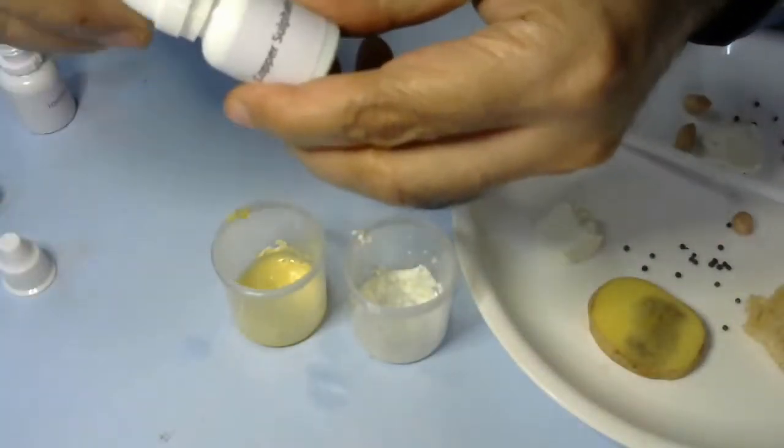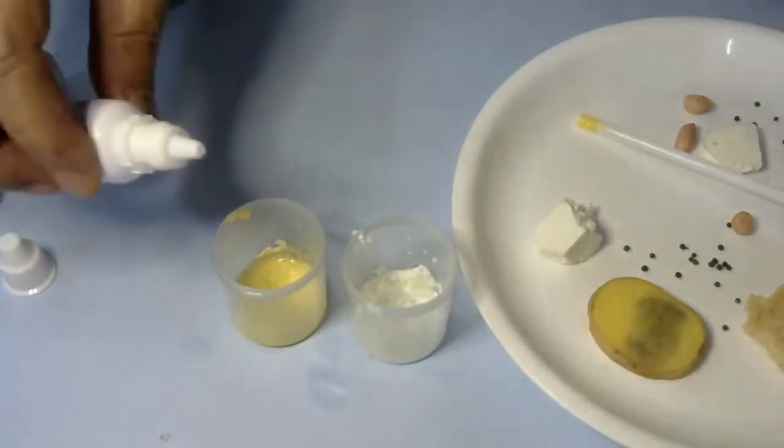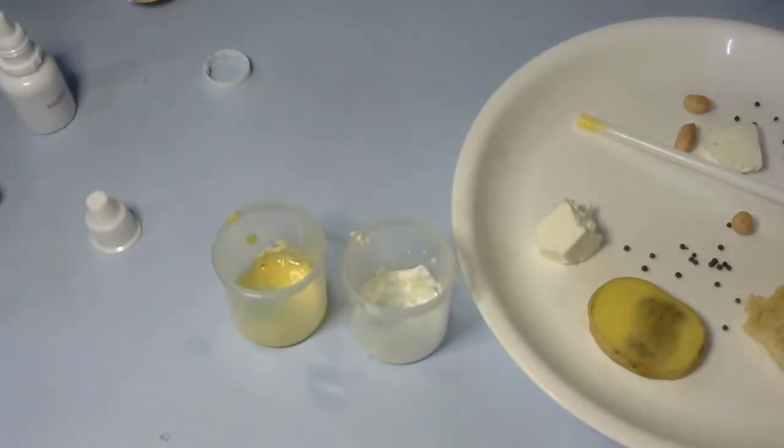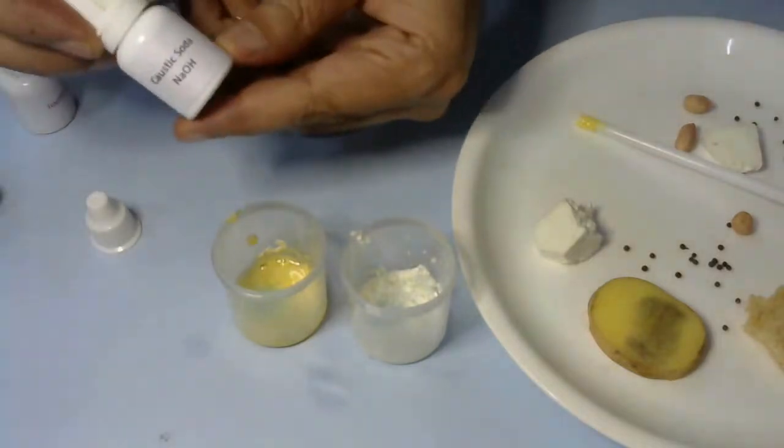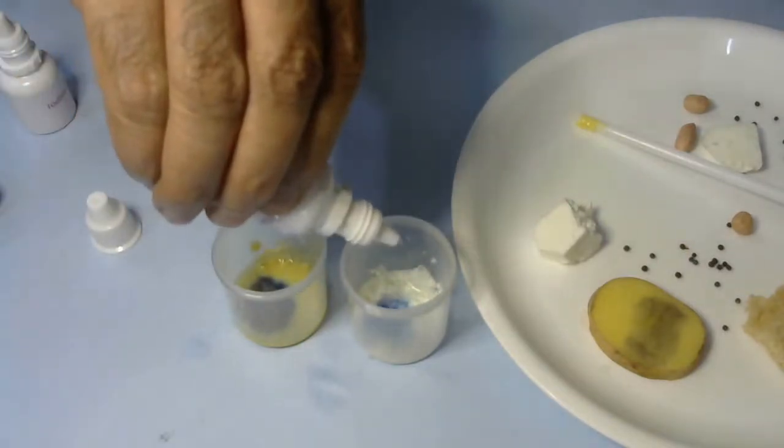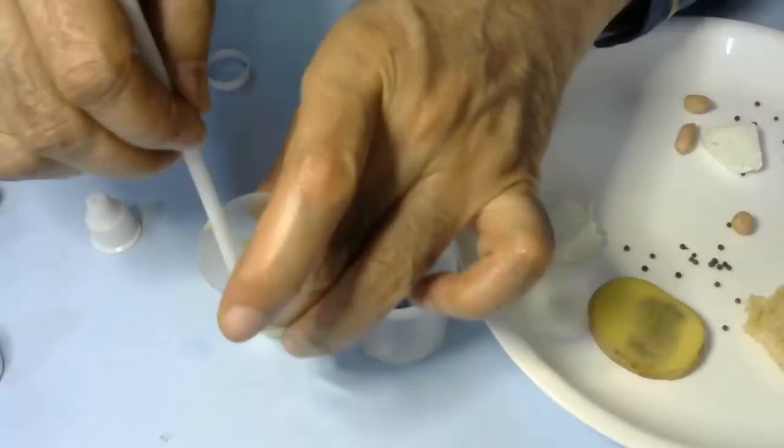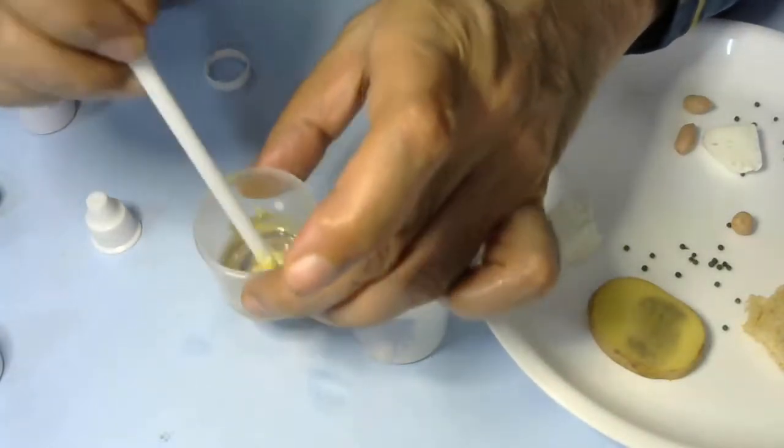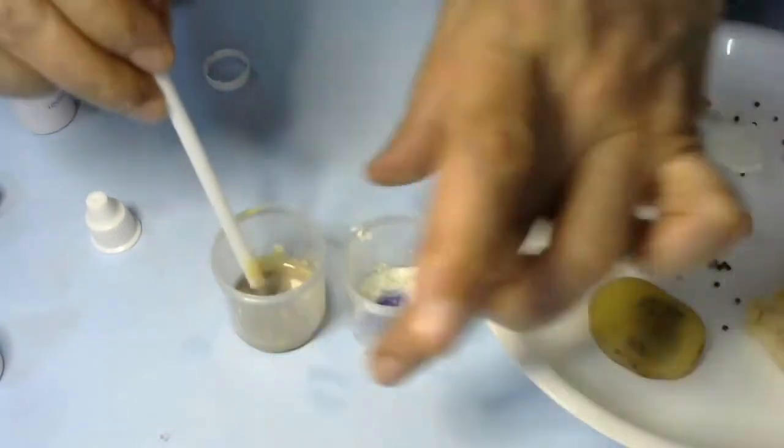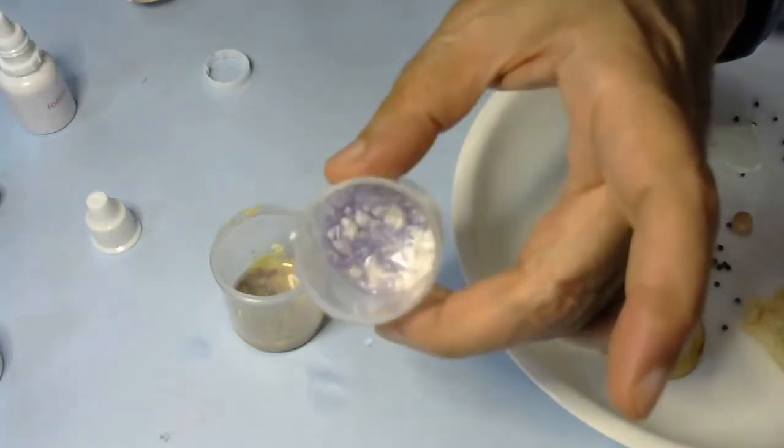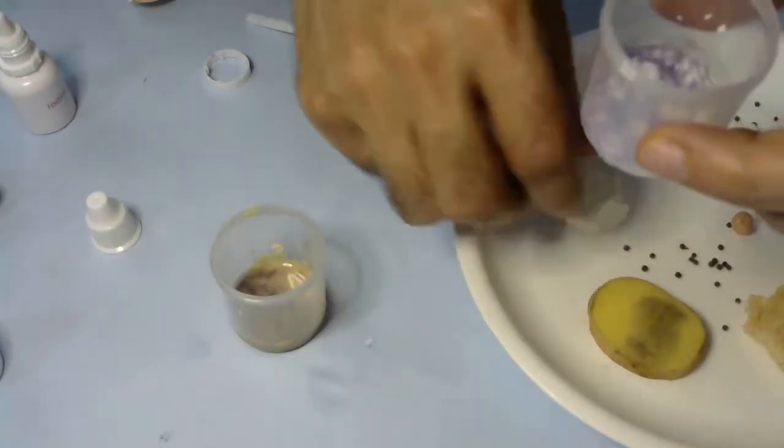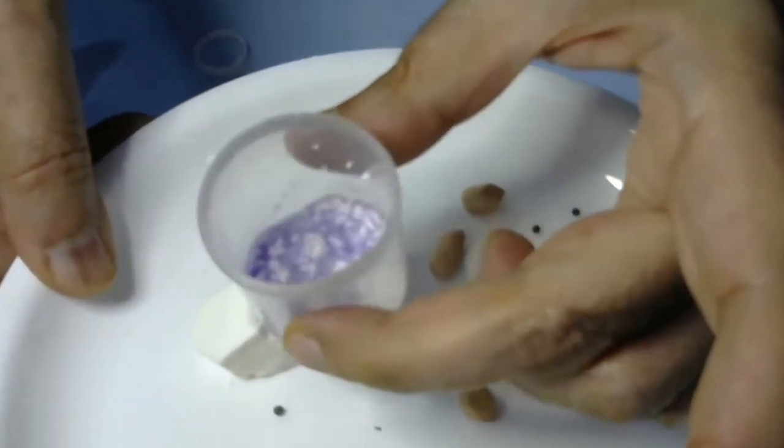For testing, first we'll put copper sulfate solution. Add only two or three drops in both of them. After that, we have to put about 10 drops of caustic soda solution. Now we'll mix them. If our food sample contains protein, the solution should turn purple or violet. You can see instantly after putting these solutions, the paneer has clearly become purple. In white background you can see clearly it has become purple.